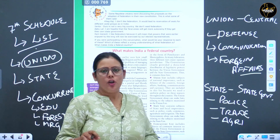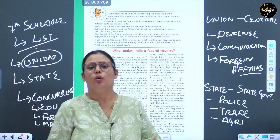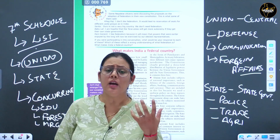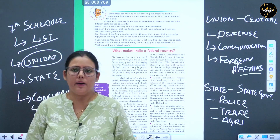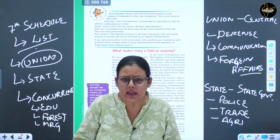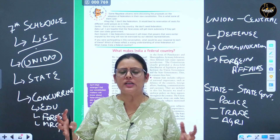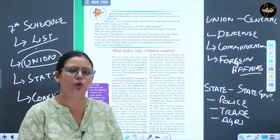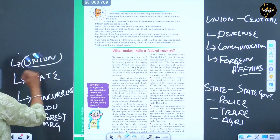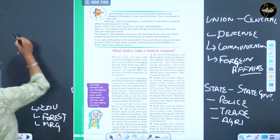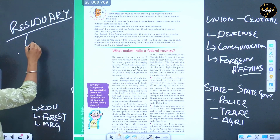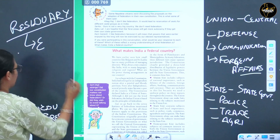After these three lists, there are subjects not mentioned in any of the three lists - the Residuary List. As time changes, new concepts and new problems arise. For example, pollution and sustainability are now major issues that weren't envisioned earlier. These new subjects that are not mentioned in the existing lists come under the Residuary List, and the right to make laws on these new topics is with the central government.